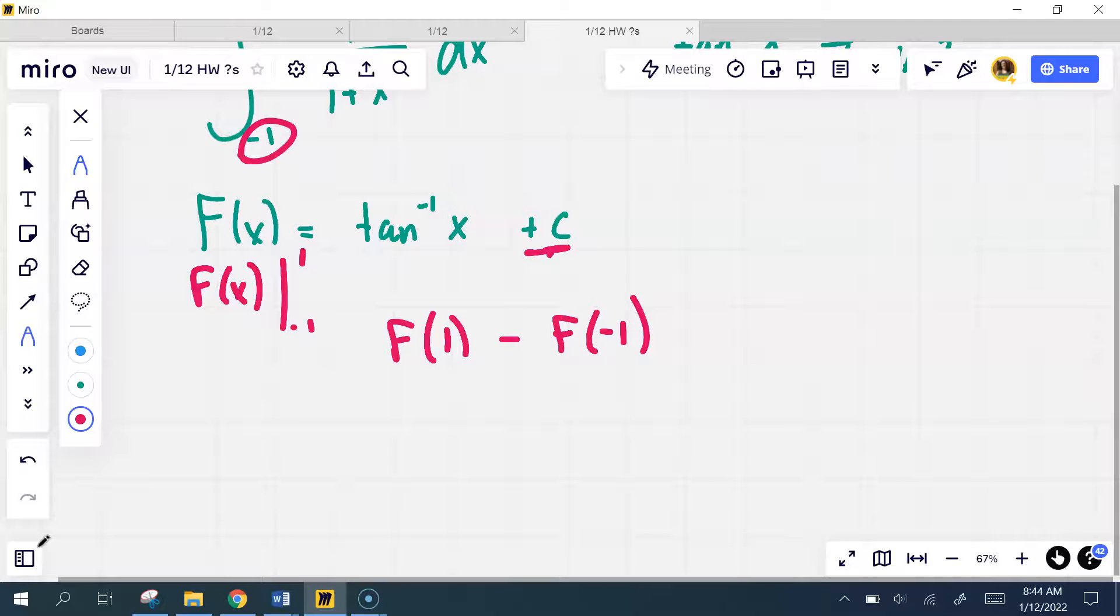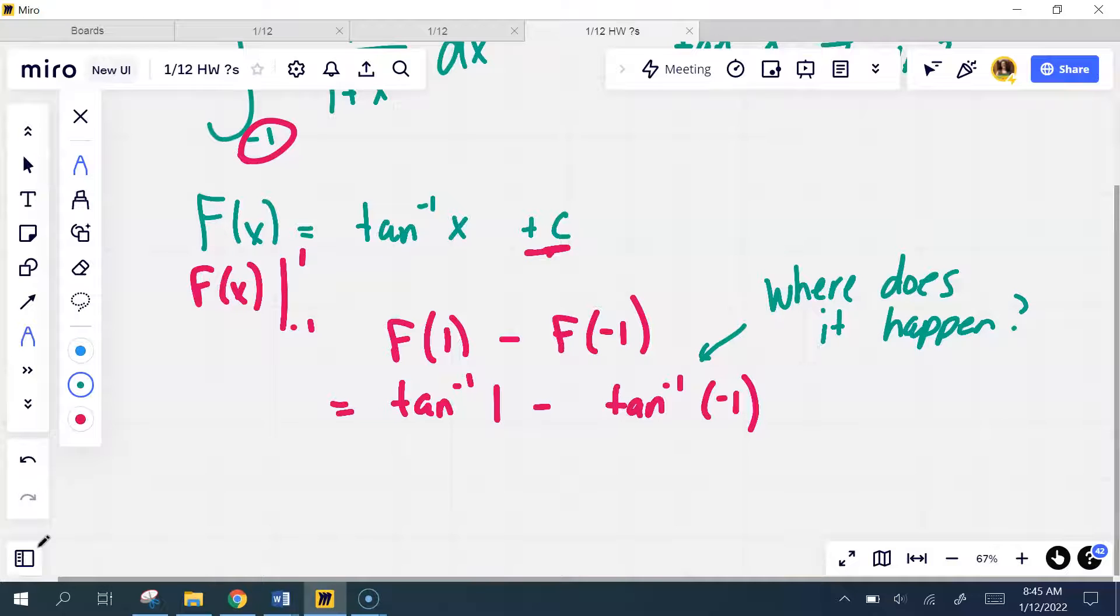So I should get the inverse tangent of 1 minus the inverse tangent of negative 1. So remember when I'm evaluating an inverse tangent, what I'm doing is I'm saying where does this value occur? That's what inverse means. Where does it happen on the unit circle? What are the values? You want to stay in your radians.